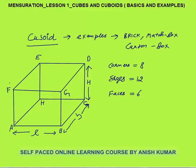Here I have made a diagram of a cuboid. AB is the length, BC is the breadth of the cuboid, and CD is the height of the cuboid. Now every cuboid has 8 corners.